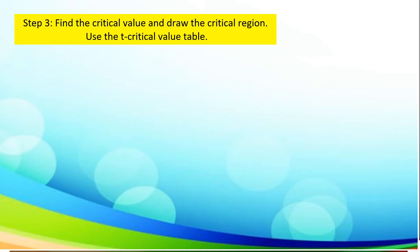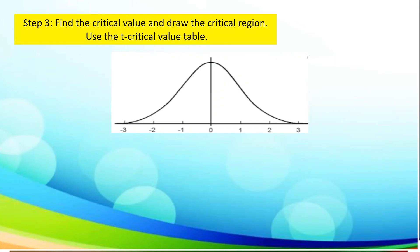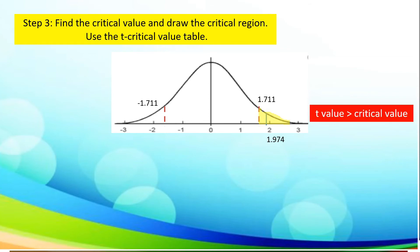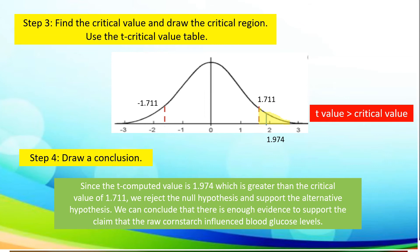Let us use step 3 to find the critical value and draw the critical region, using the t-critical value table. Remember, the degree of freedom is 24. Applying that on our standard normal curve, we can locate negative 1.711 and positive 1.711. Our computed value is 1.974, which is located in the rejection region. We can say that the t-value or the computed value is greater than the critical value. We can conclude that we reject the null hypothesis and support the alternative hypothesis. There is enough evidence to support the claim that the raw cornstarch influences blood glucose level.